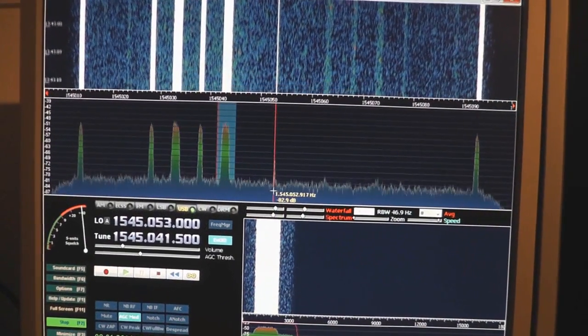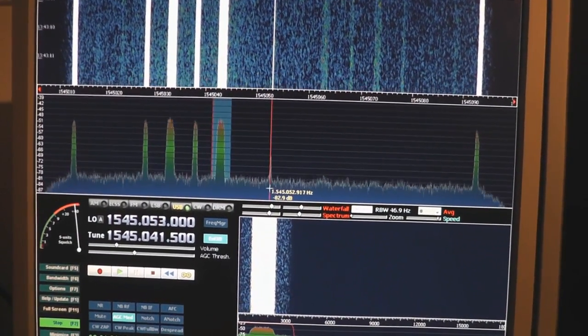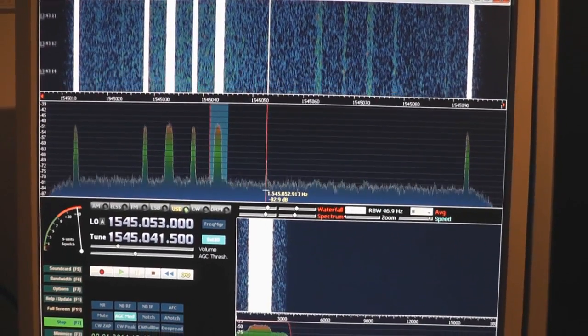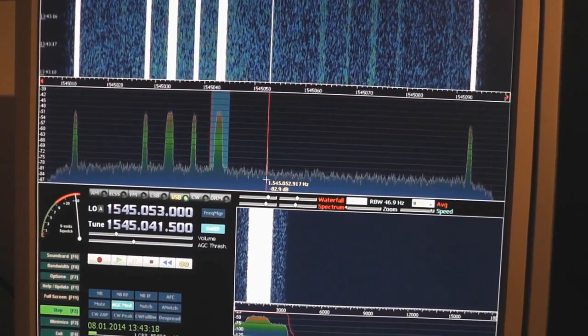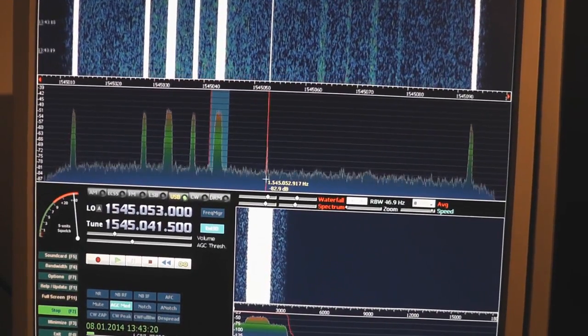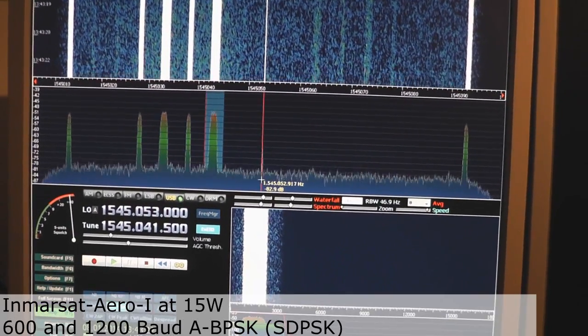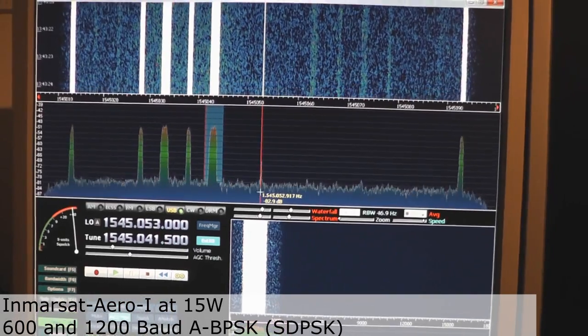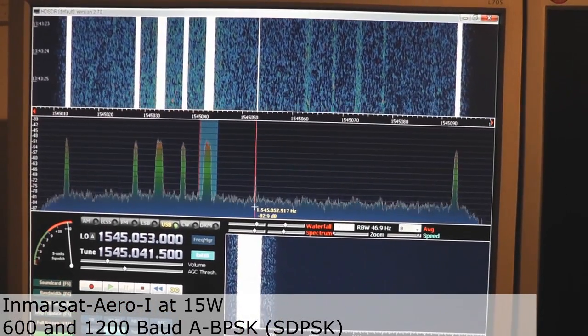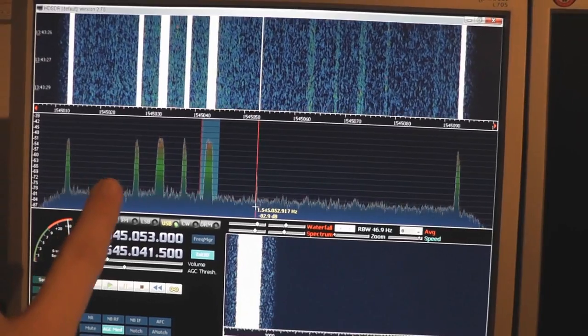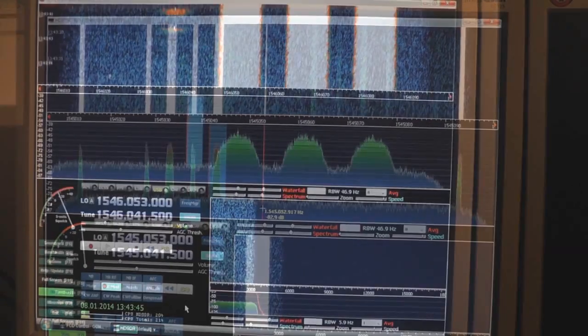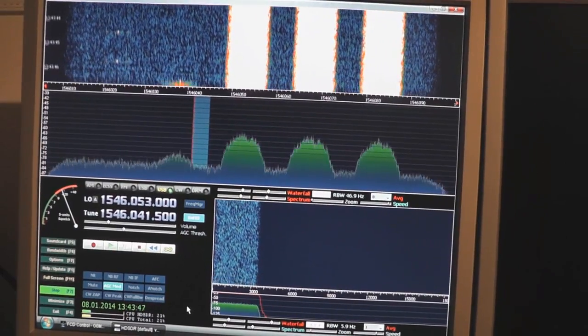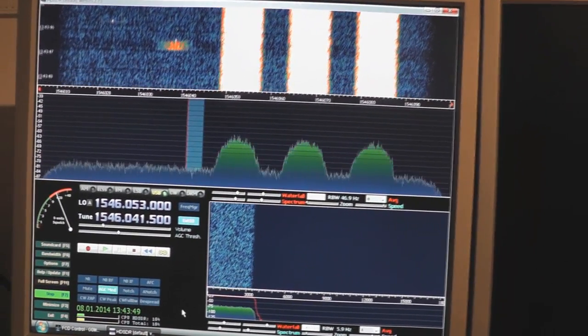This is the Inmarsat IR channels. This is a 1200-baud BPSK signal. There are also the narrower stripes here, which are 600-baud signals. And these are the high-speed IRO-H channels.